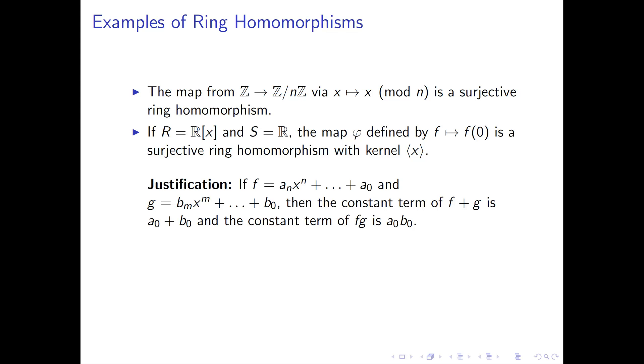For our next example, let's do something a little bit different. Let's take our ring R to be the polynomial ring, where we're looking at polynomials with real coefficients, and let's let the ring S be the ring of real numbers, and let's define our map phi. How do we take a polynomial and know what real number to output? We'll take a polynomial and we'll output f of 0, where f of 0 is really just the constant term of the polynomial f. I claim that this map is a surjective ring homomorphism and that the kernel of this map is the ideal generated by x. First, let's justify that this is in fact a ring homomorphism. What we need to check is that our operations of addition and multiplication are preserved.